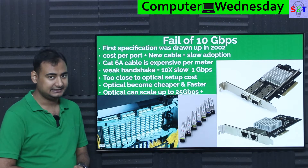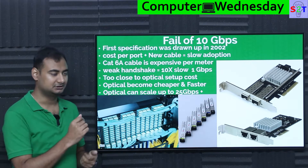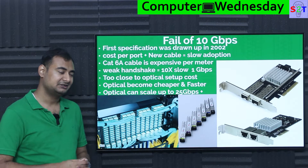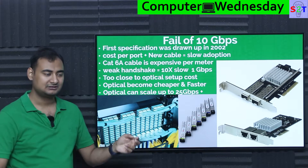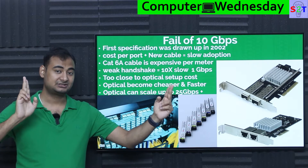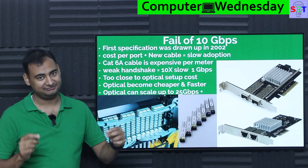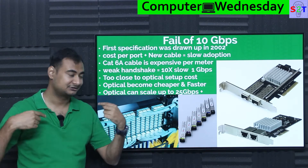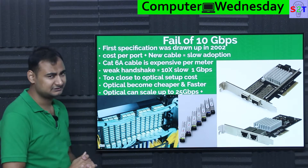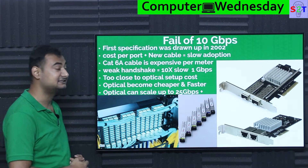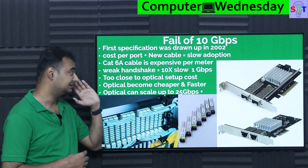Cat6a created a slow adoption paradox - people were not eager to jump into it. Cat6a cable is ludicrously expensive per meter. The gauges are a bit thicker than Cat5e, but the real issue is the twist - it has way more twists per foot. If you take one meter of cable and twist it, it shrinks; twist it more, it shrinks more. A proper Cat6a cable, when untwisted and straightened out compared to Cat5e, uses almost twice the cable length, plus a lot of plastic shielding. It's exponentially expensive per meter.